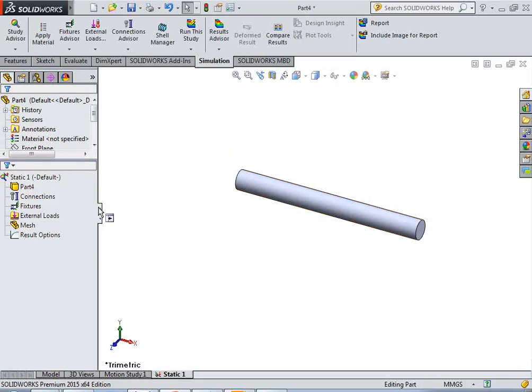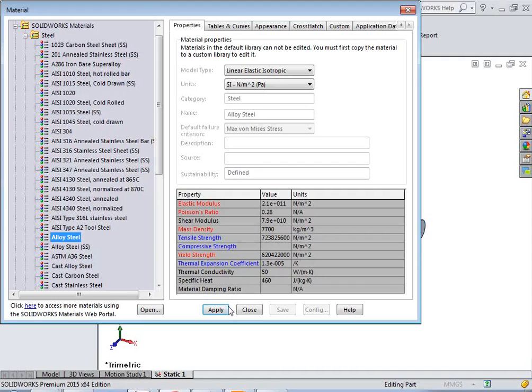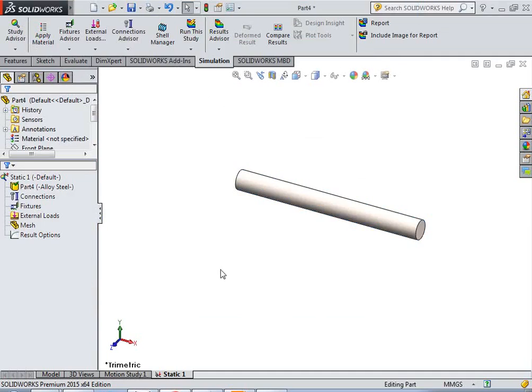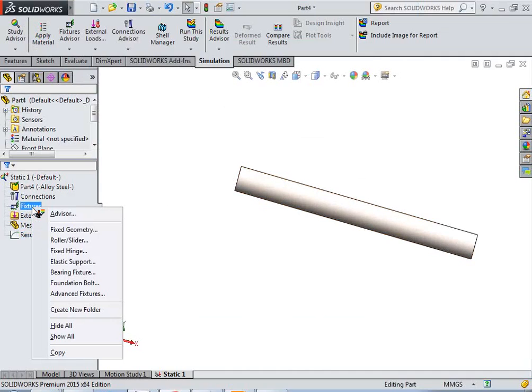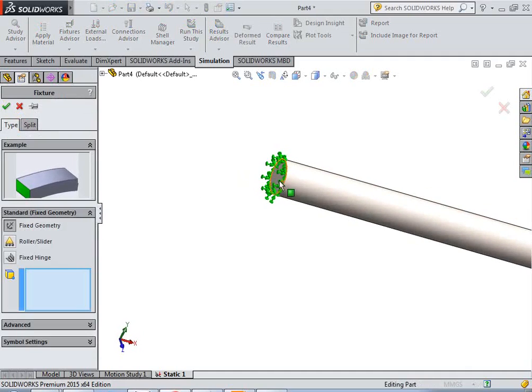So, first of all, I will assign the materials of alloy steel. This end is fixed, this is the fixed end. So, just simply right click on fixture and select the fixed geometry and select this end, okay.